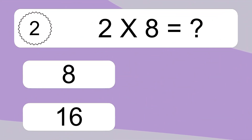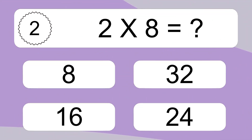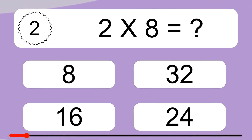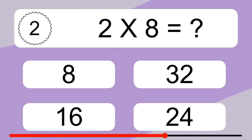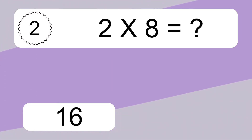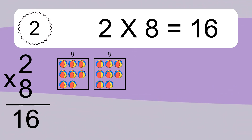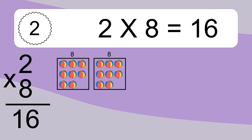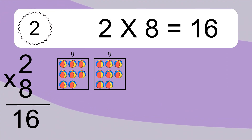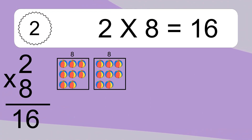2 times 8 equals what? 2 times 8 equals 16. We have 2 boxes, and each box has 8 colorful balls inside. If you count all the balls in all the boxes together, you will have 2 times 8 balls. This equals 16 balls.